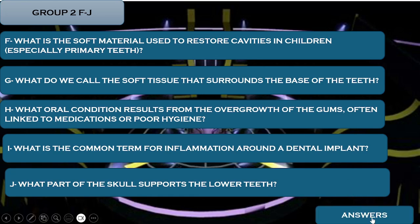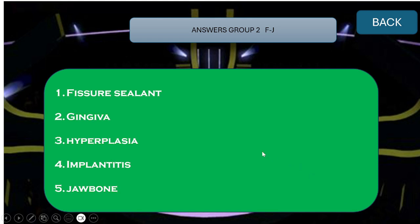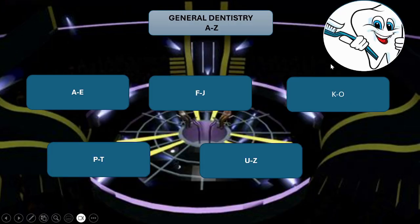Let's check the answers. F was for Fissure Sealant, G was for Gingiva, H was for Hyperplasia, I for Implantitis, and J for Jawbone. Let's go to the third group.